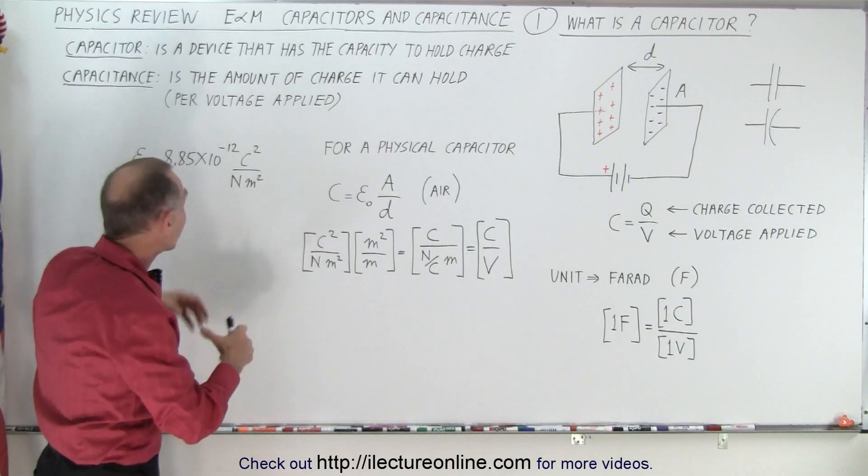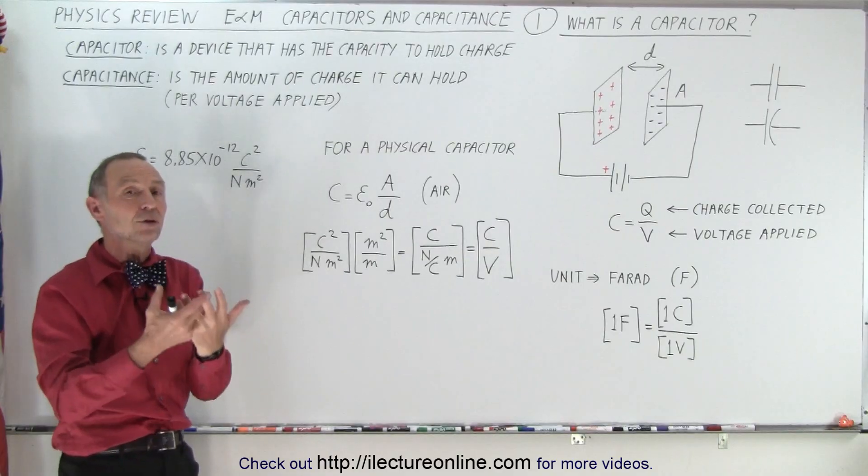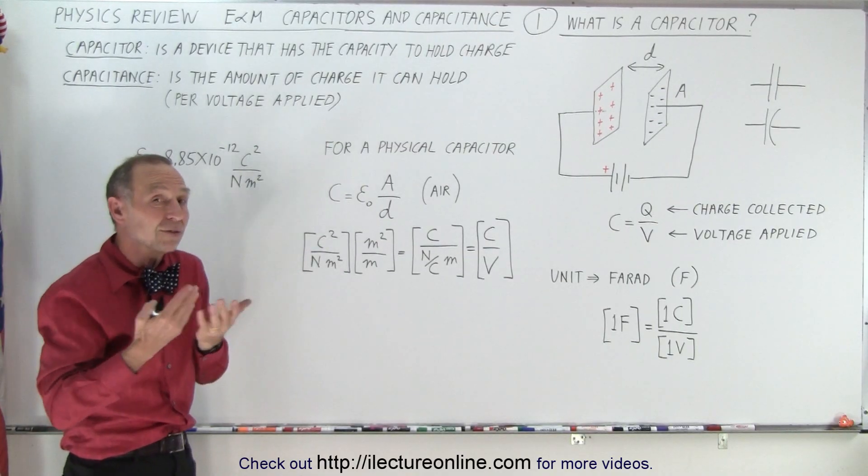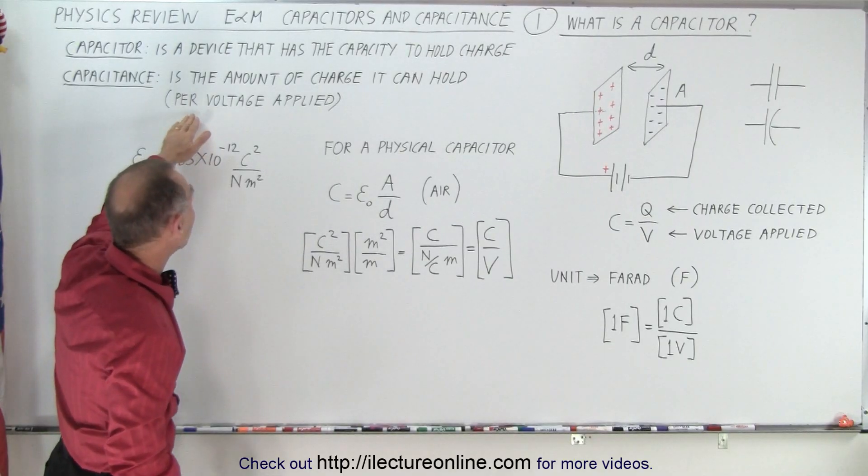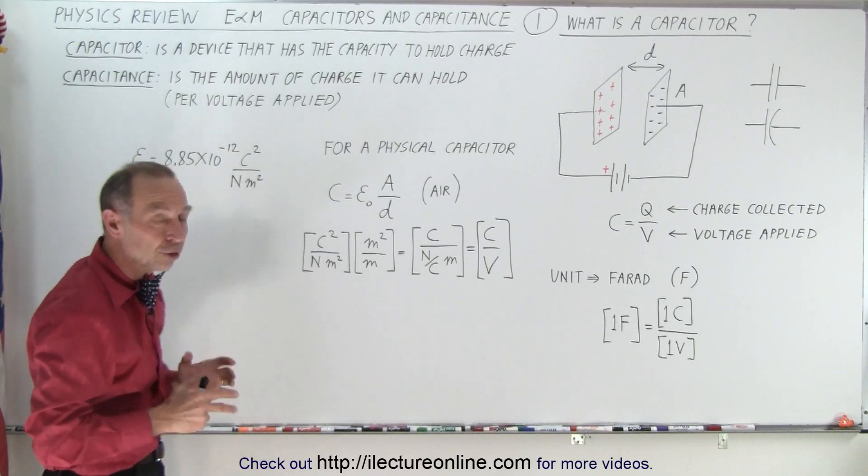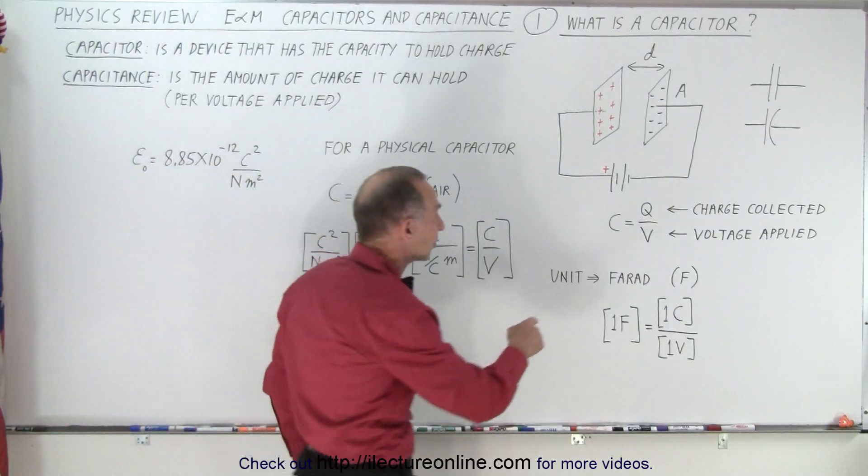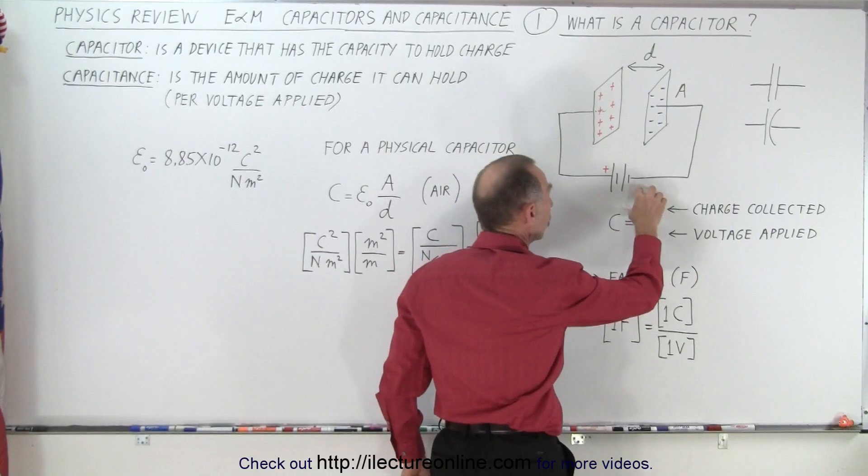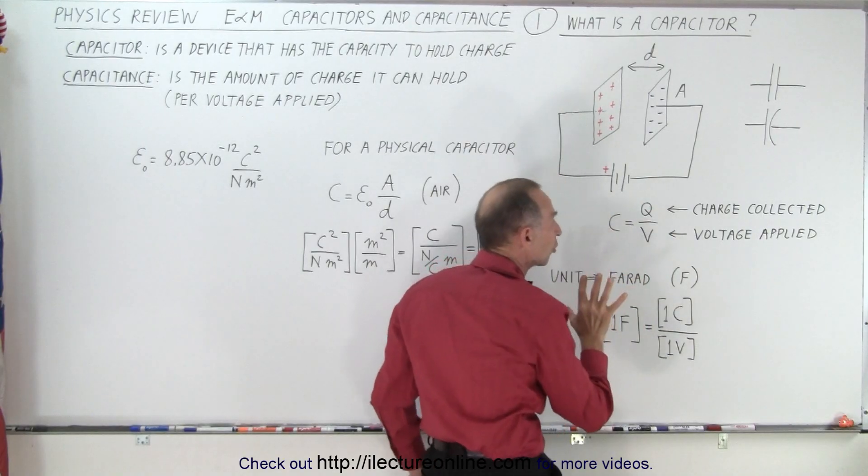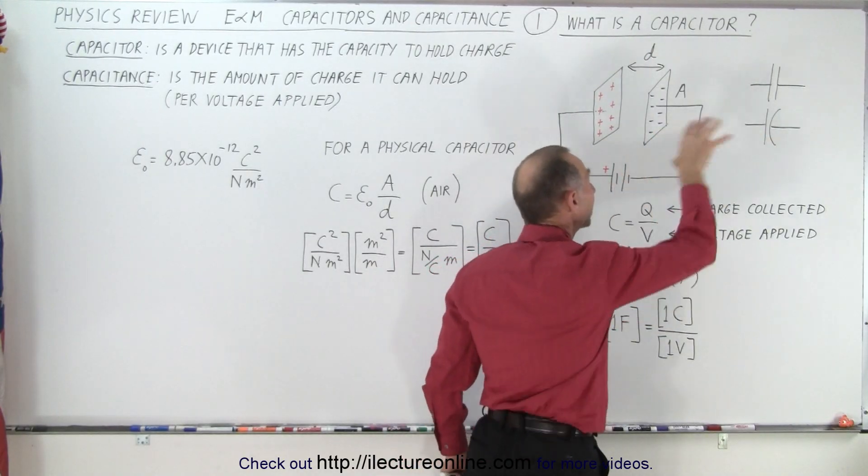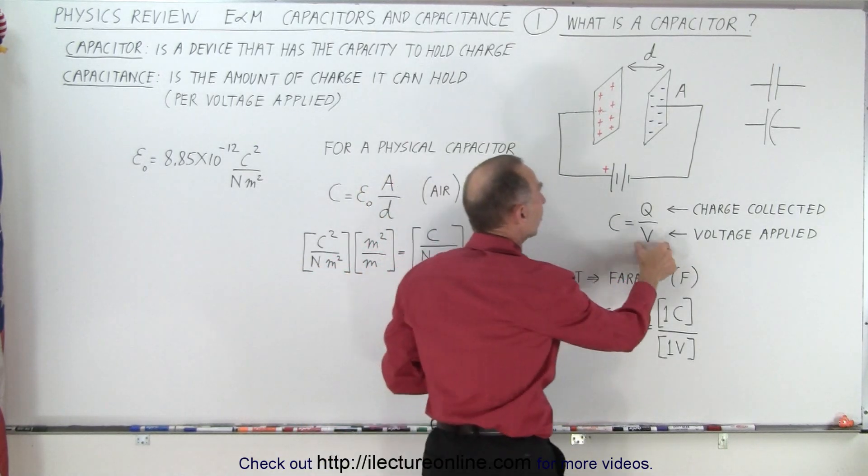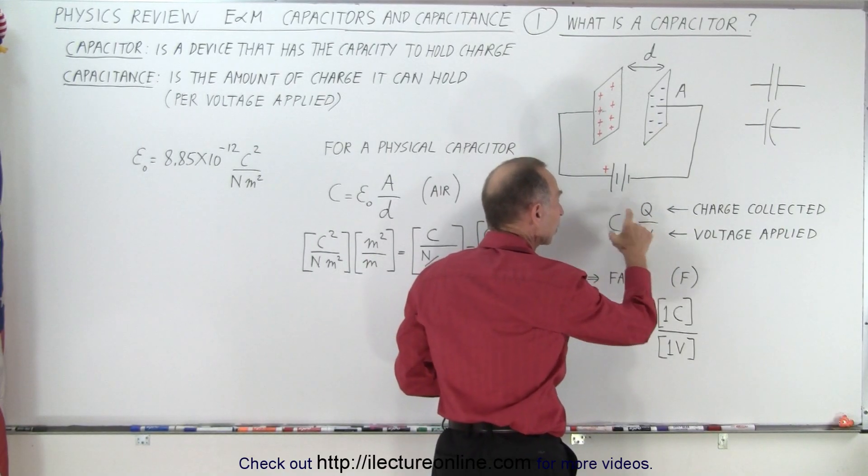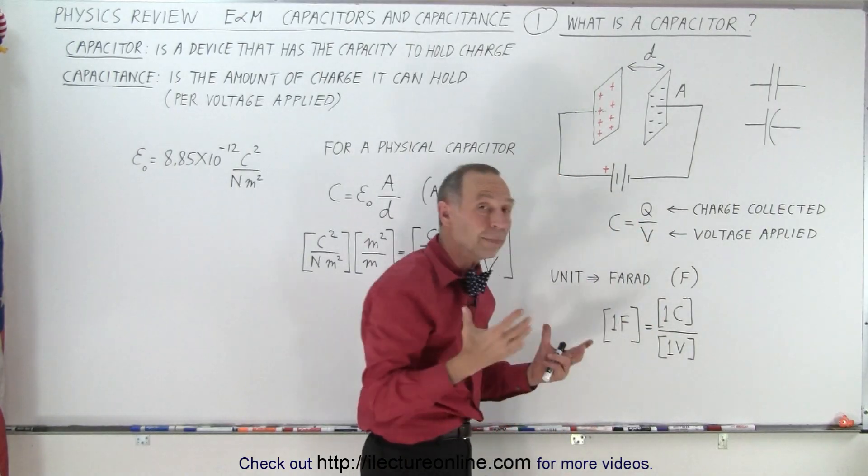Now the capacitance is the amount of charge a capacitor can hold. Some capacitors have a lot of capacitance. Some capacitors have a small amount of capacitance and it depends upon how much voltage you apply to the capacitor. So the equation that tells you what the capacitance is, it is equal to the charge divided by the voltage. Now the charge is the amount of charge you could put onto the plates. They call that the charge collected on the plate and divided by the voltage applied. So the more voltage you have to apply in order to get charge on there the smaller the capacitance of the capacitor.